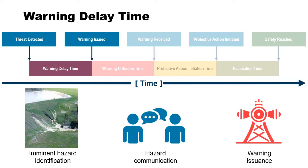They then need to communicate with the emergency management agency. In Oroville, they were all in the same room, so that communication delay was zero. But if you're at a dam way out in the mountains without phone access, it could take hours before you can drive to a point where you can communicate. So that communication delay is a factor that can be important.